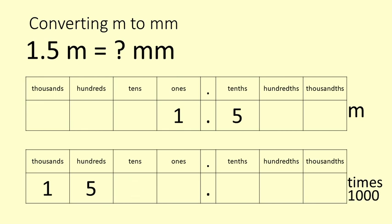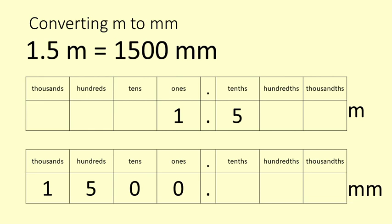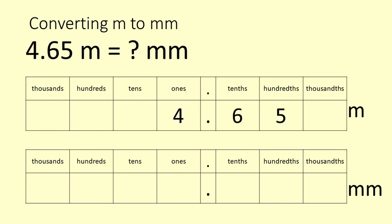So we've ended up multiplying by 1000. We put zeros in to act as placeholders and we end up with 1500 millimetres. So 1.5 metres is 1500 millimetres. Let's do it again.